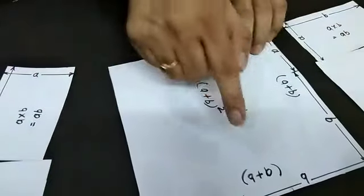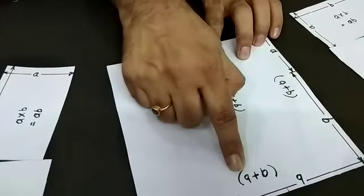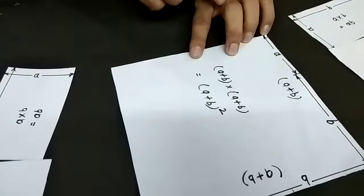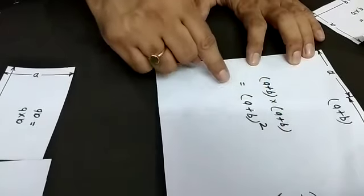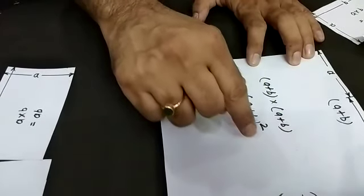We can see the square has side (a+b). So the area of this square is (a+b) × (a+b), which equals (a+b)².